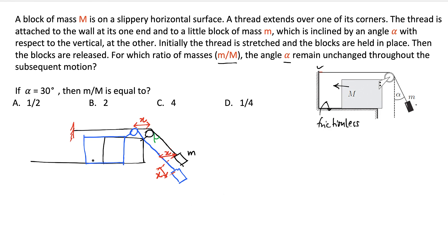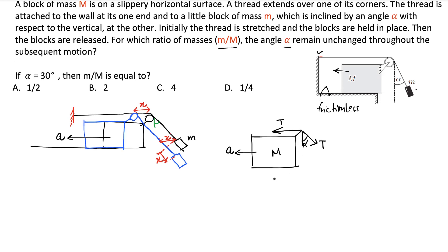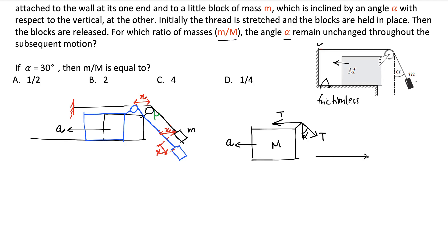So now let's assume that the acceleration of this block is, let's say, A. And if this is A for the bigger block, let's say we draw the free body diagram for the bigger block now. There is a tension T here. Let's call it T. And then some tension, same tension T here. This is moving with acceleration A. And this angle is alpha.